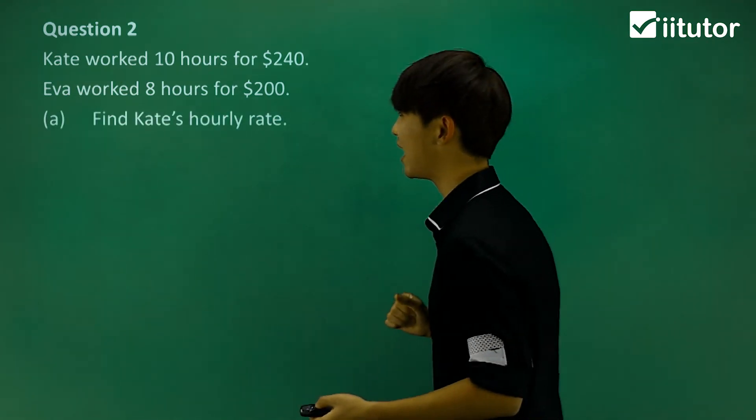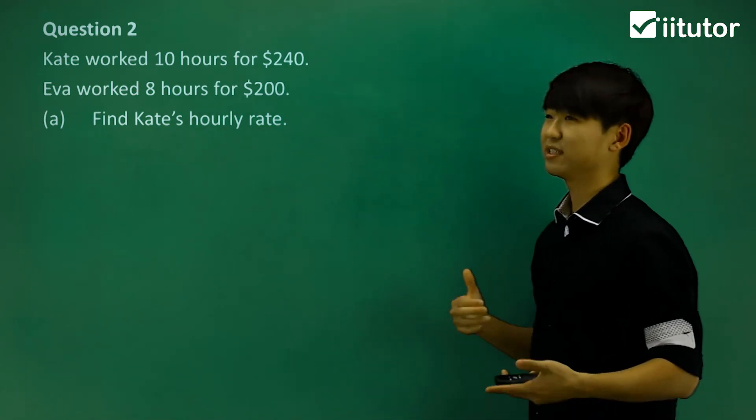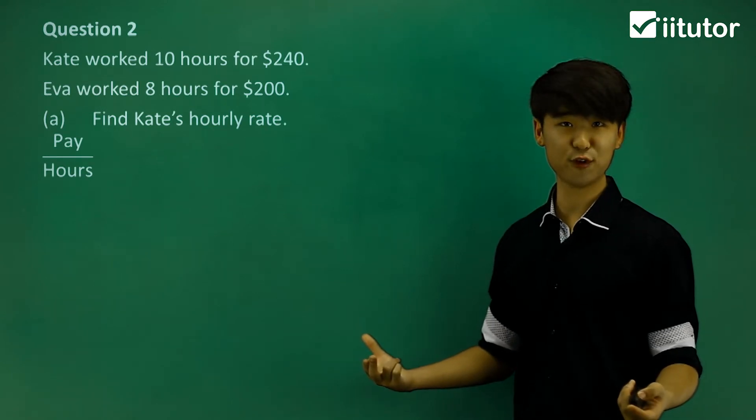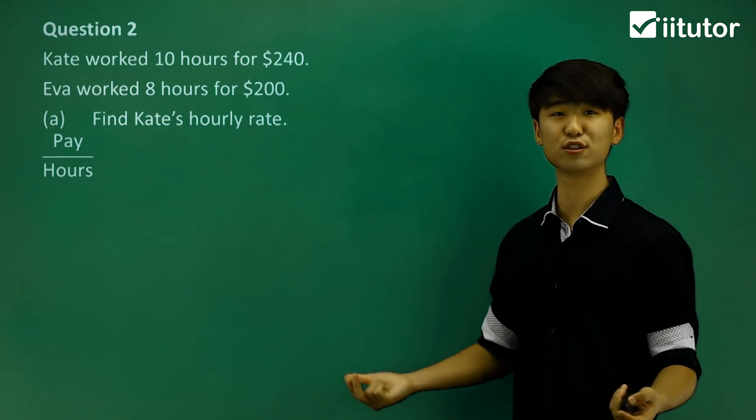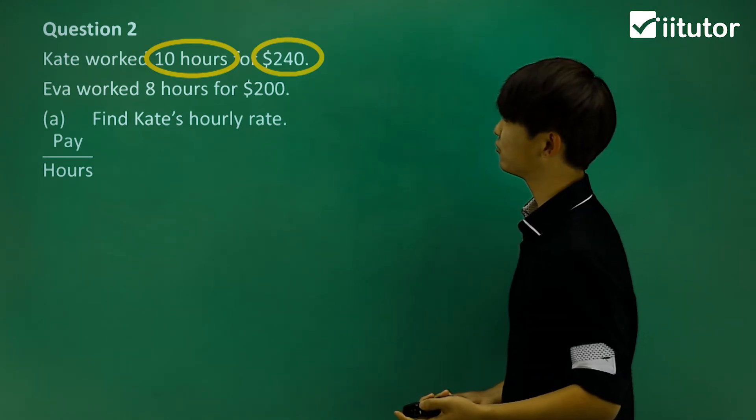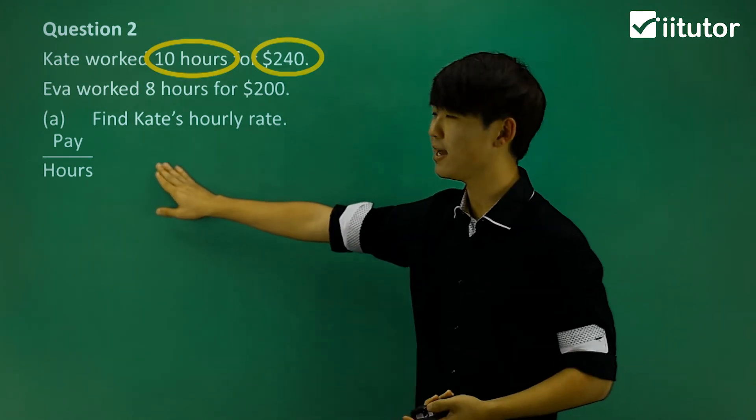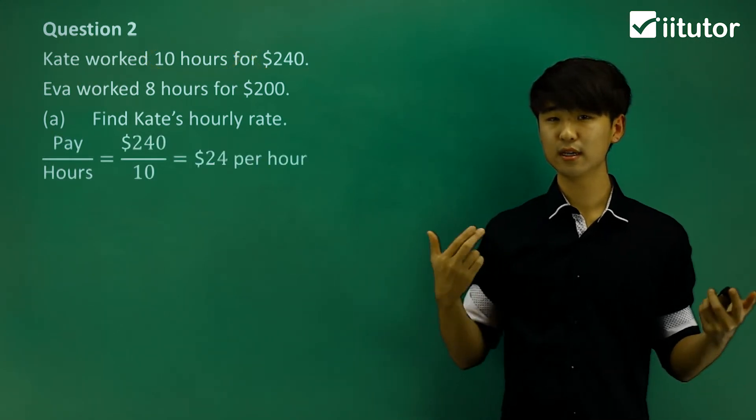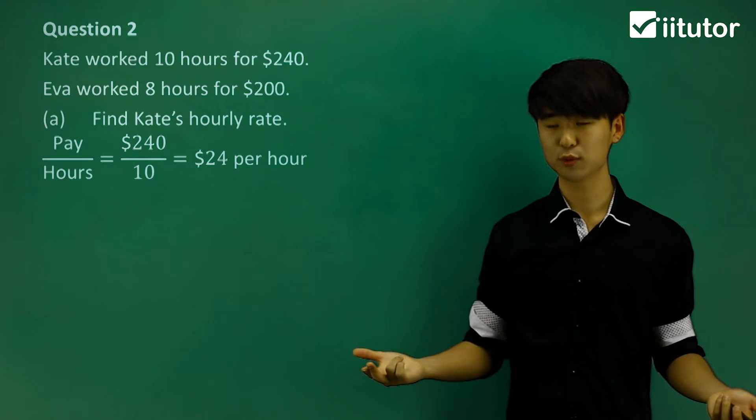So finding Kate's hourly rate, which means how much did she earn per hour? Well, she worked 10 hours, and she got $240. So 10 hours for $240, then if we go pay over the amount of hours she worked, and calculate it, we can see her hourly rate was $24 per hour.